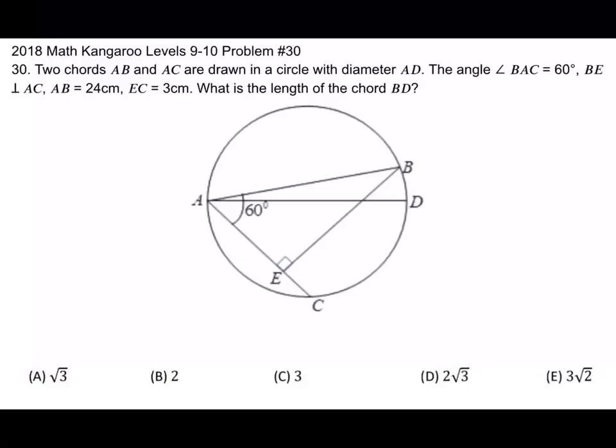Two chords, AB and AC, are drawn in a circle with diameter AD. The angle BAC is equal to 60 degrees. BE is perpendicular to AC. AB is equal to 24 centimeters, and EC is equal to 3 centimeters. What is the length of the chord BD?